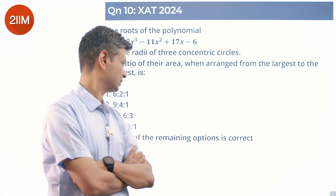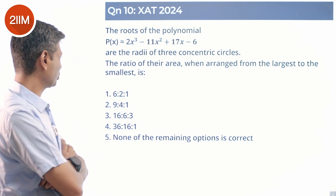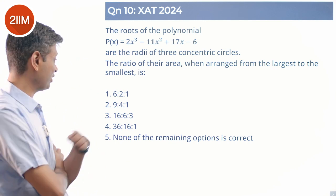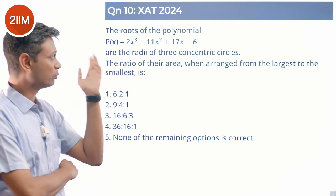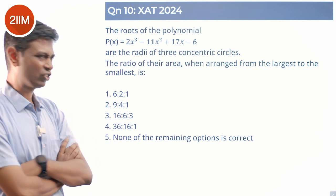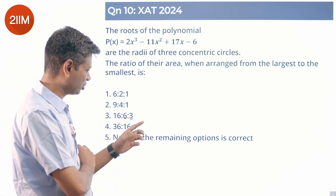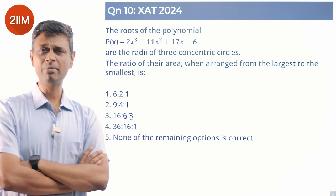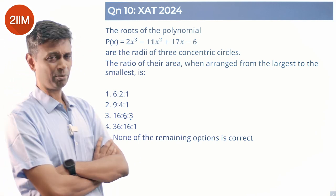6:2:1, I'm not interested in area. 9:4:1, so the roots could be 3, 2, 1. 16:6:3 - root 16, root 6, root 3. 4, root 6, root 3 may be possible, but I'm not such a big fan of that.